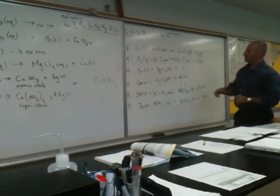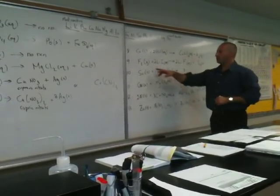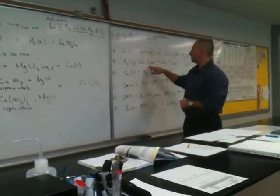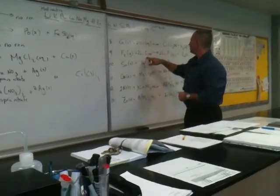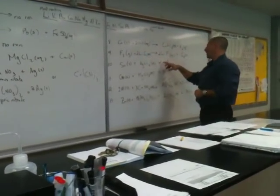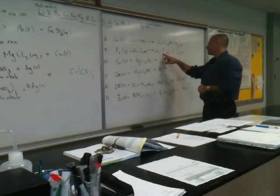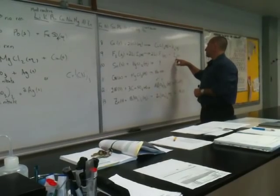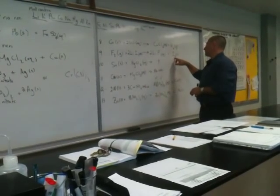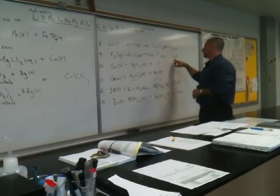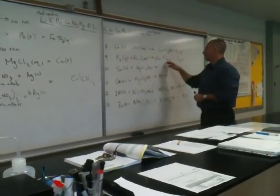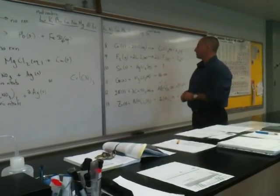In this example, we have fluorine trying to replace iodine. Fluorine is more reactive, so it does replace iodine. The result is elemental iodine in the solid state and aqueous fluoride.